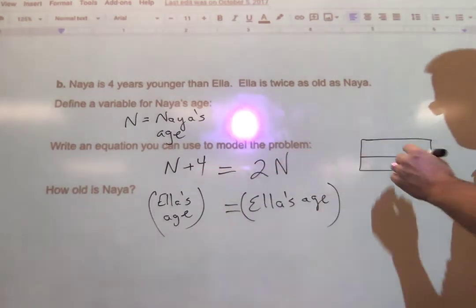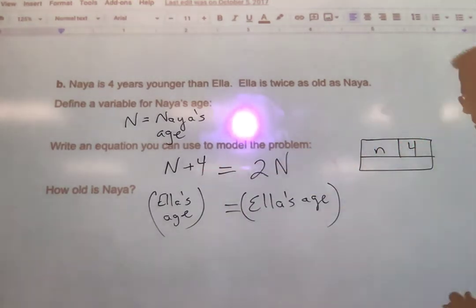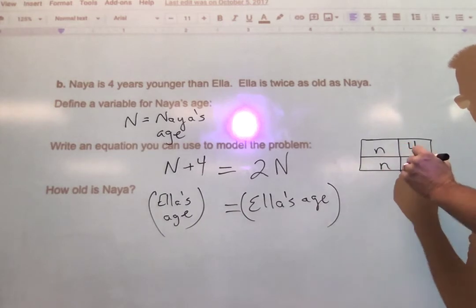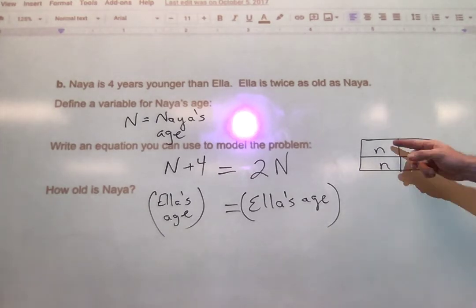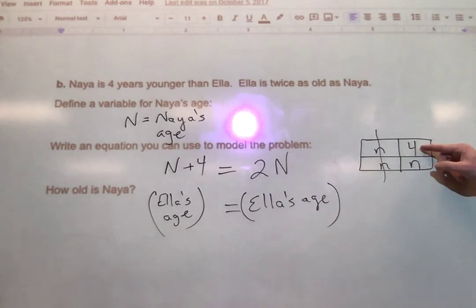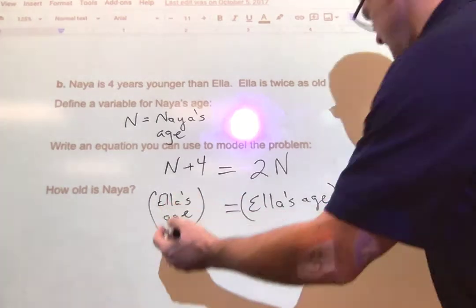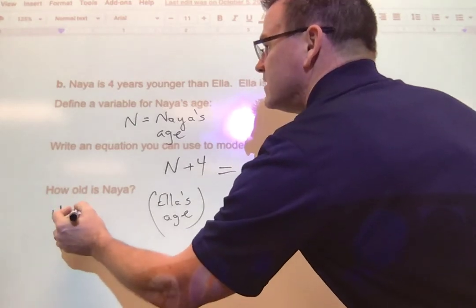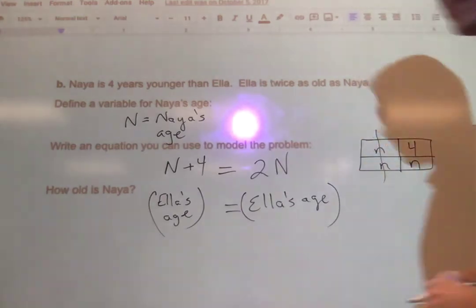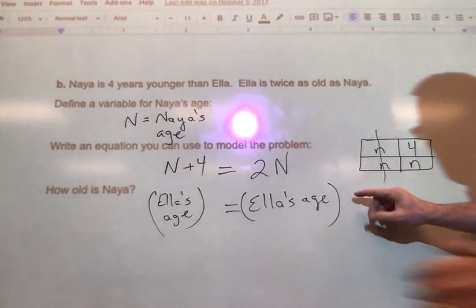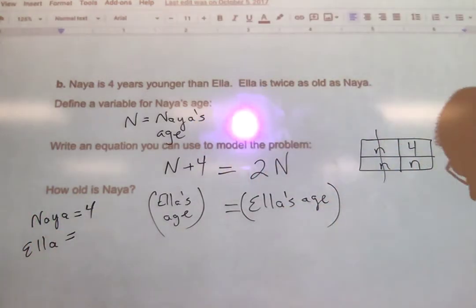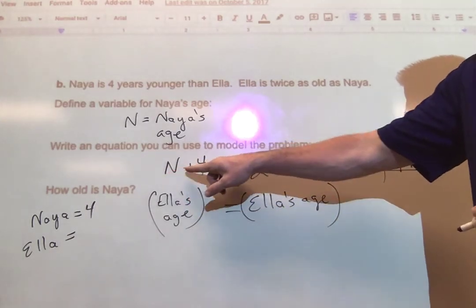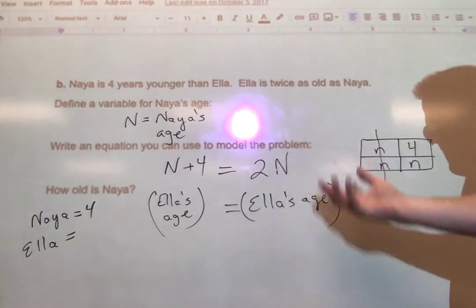Since we have all multiplying and adding, the bar model is a good choice. Let's make two bars: the top bar is N plus four, and the bottom bar is two N's. I can break two N into N and N. Since N equals N, I can match those and what's left is that N has to equal four. So Naya is four years old.